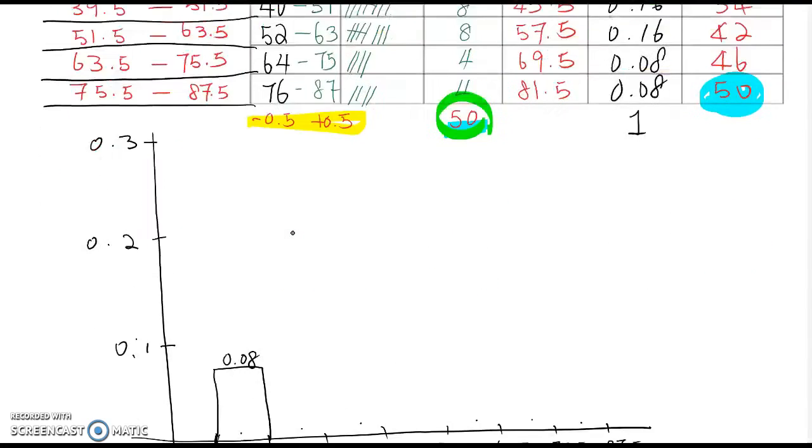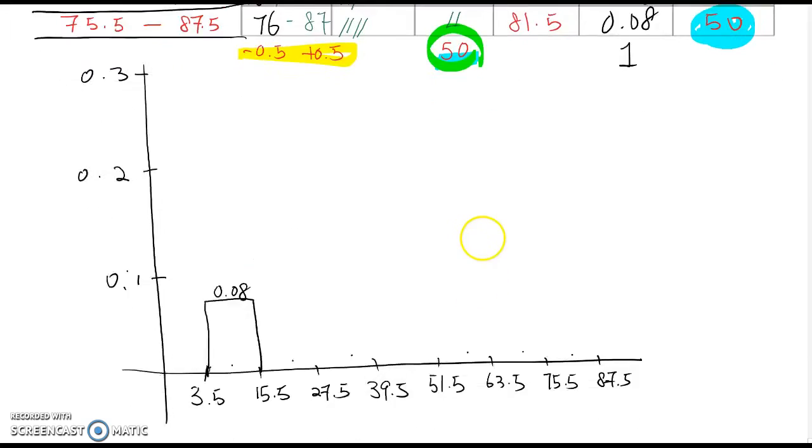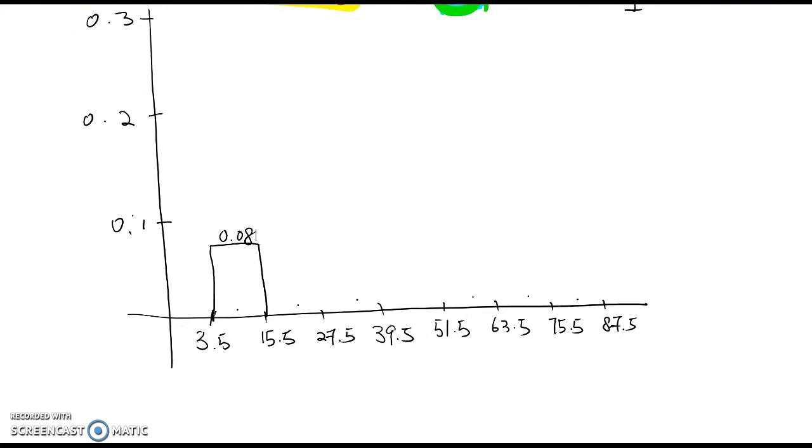Second one is 0.16. So 0.16 looks like between 0.1 and 0.2, but a little bit more toward 0.2. So let's say this is 0.15, then 0.16 will be here.